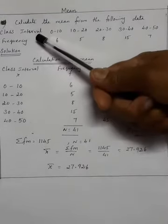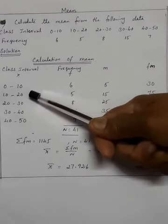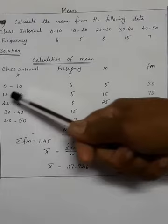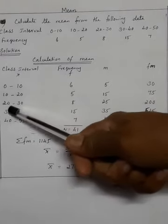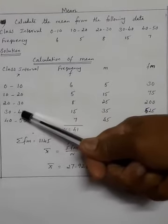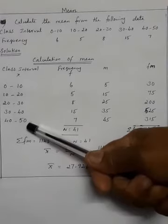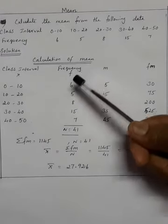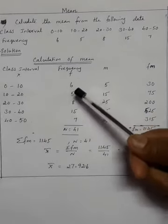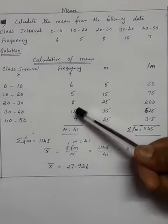In the question, X equals class interval: 0-10, 10-20, 20-30, 30-40, 40-50. Frequency, number of students: 6, 5, 8, 15, 7.